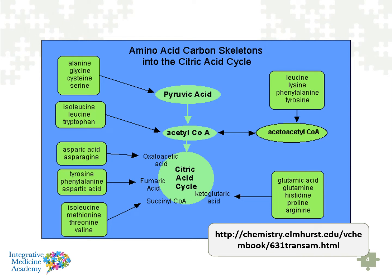When we think of amino acids and their ability to get into the mitochondria for ATP production, there are many paths to take. Certain amino acids like alanine, glycine, cysteine, and serine can be converted to pyruvic acid, which then gets converted to acetyl coenzyme A. Others can enter directly at acetyl coenzyme A, or still others — one of them being oxaloacetate — can get in through aspartic acid or asparagine.